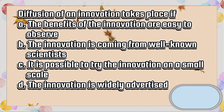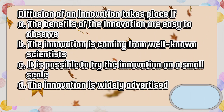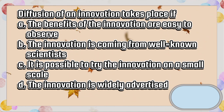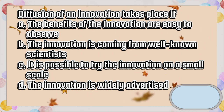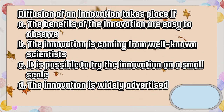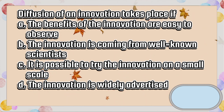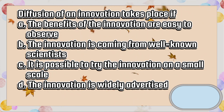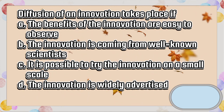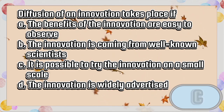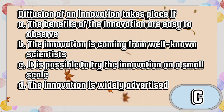Diffusion of an innovation takes place if: A. The benefits of the innovation are easy to observe. B. The innovation is coming from well-known scientists. C. It is possible to try the innovation on a small scale. D. The innovation is widely advertised. The answer is letter C.